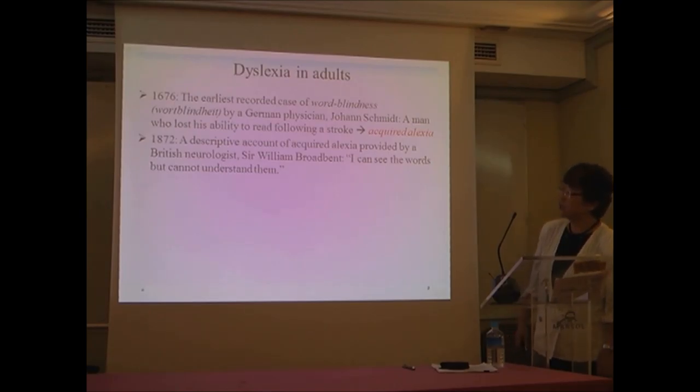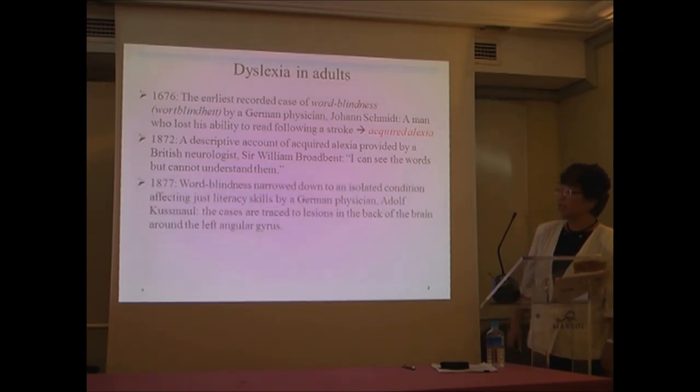In 1872, a descriptive account of acquired alexia was provided by British neurologist Sir William Broadbent, who has a patient who says, 'I can see the words but cannot understand them.' In 1877, word blindness was narrowed down to an isolated condition affecting just the literacy skills. This is by German physician Adolf Kussmaul. These cases are traced to lesions in the back of the brain, around the left angular gyrus. It was a localized disorder.